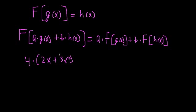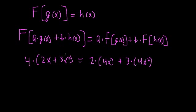If we multiply 2x plus 3x squared by 4, we know that's the same as 2 times 4 times x plus 3 times 4 times x squared. This shows that operating on the entire input is the same as operating on each part with the same scalar and adding — that's the defining property of a linear operator.